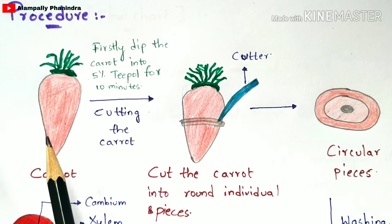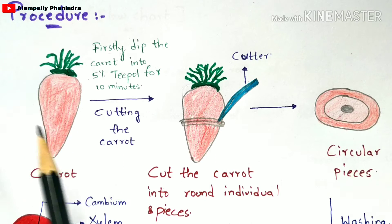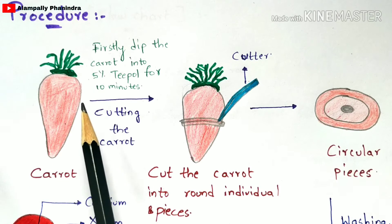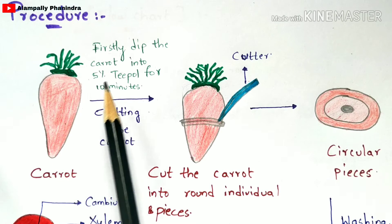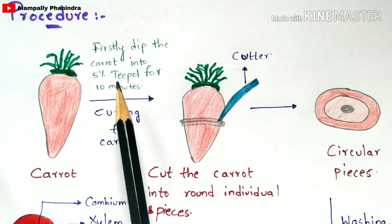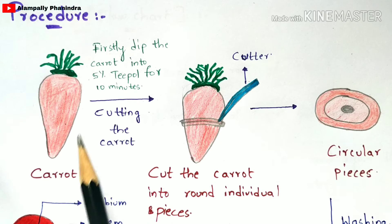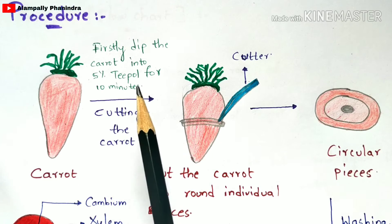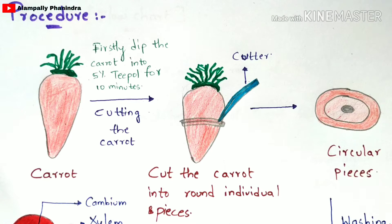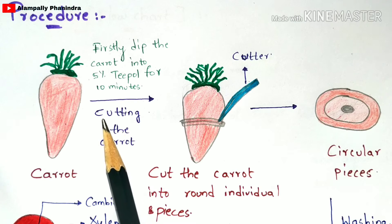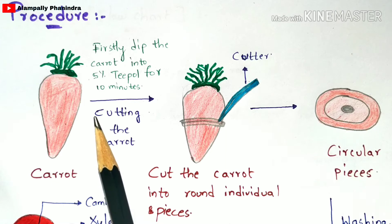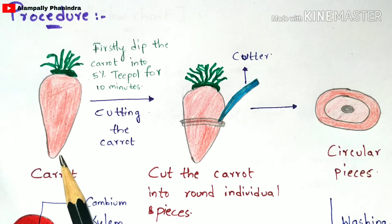In the next step, you dip the carrot into a 5% Teepol solution for 10 minutes. The reason for dipping in 5% Teepol solution is for the removal of bacteria — however, 100% of the bacteria will not be removed at this stage.